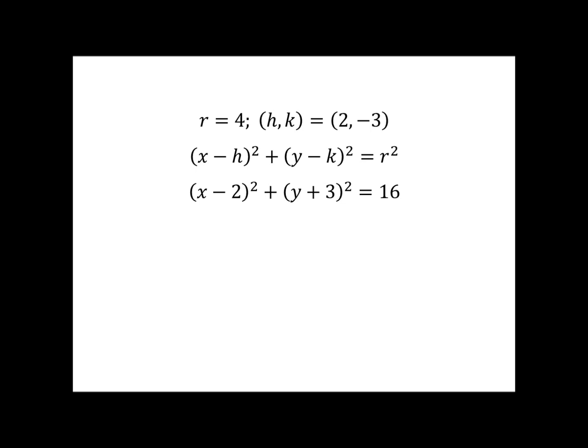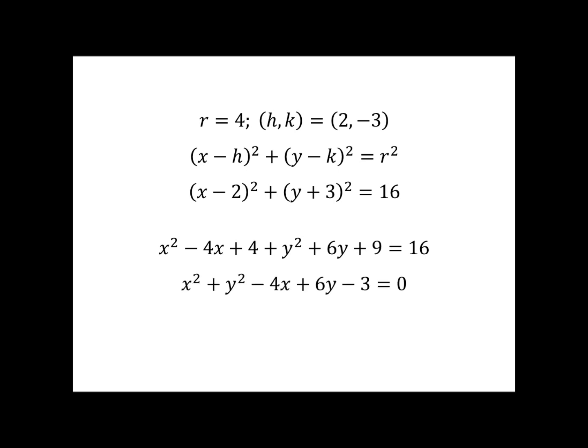To convert from standard form to general form, we FOIL out the two binomials. Squaring x minus 2 gives x squared minus 4x plus 4; squaring y plus 3 gives y squared plus 6y plus 9. Rearranging and bringing the 16 over, we get x squared plus y squared minus 4x plus 6y minus 3 equals 0. These two equations — standard and general form — represent the exact same circle with radius 4 and center (2, negative 3).